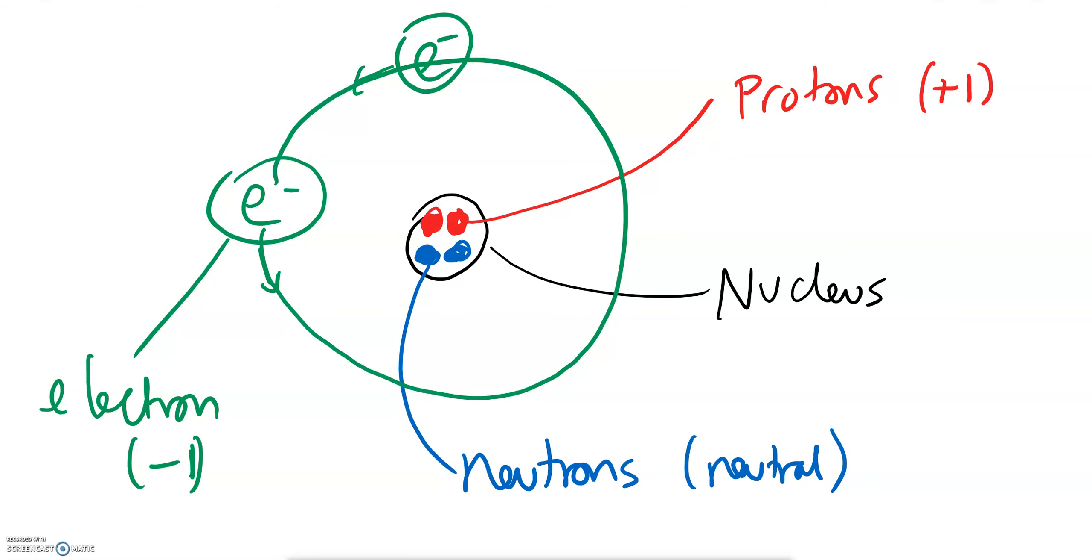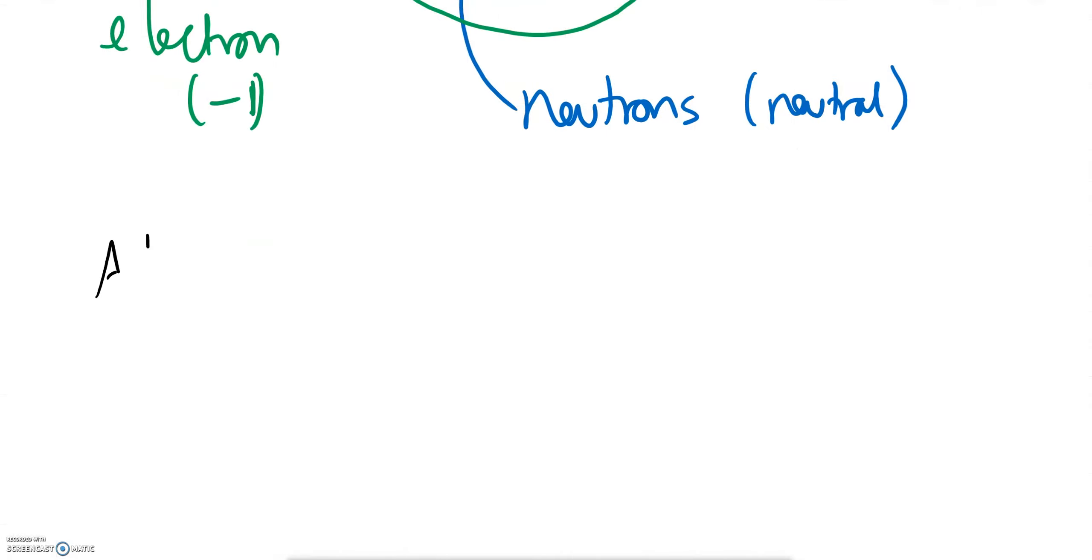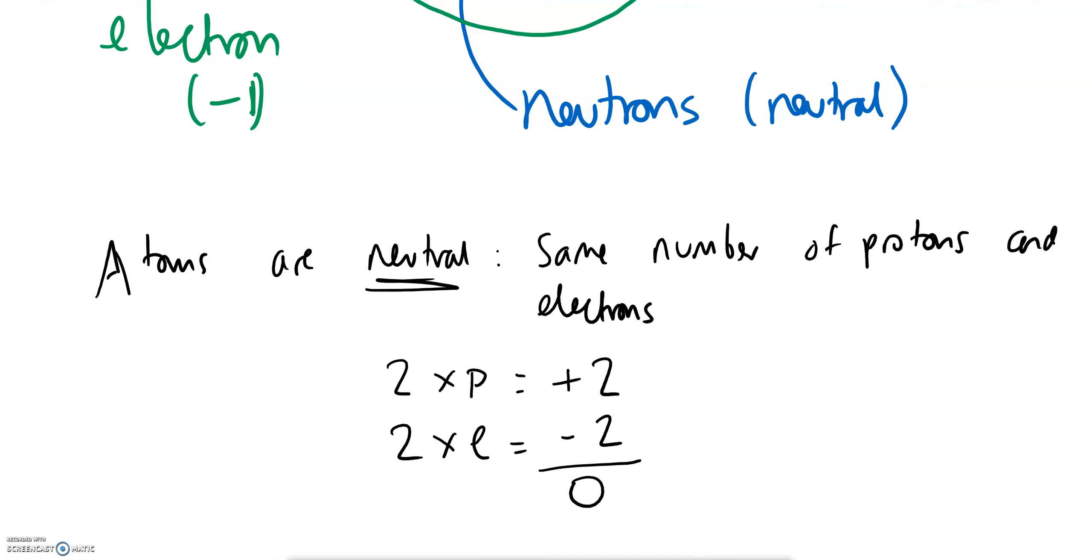So just a reminder that if you want an atom, atoms are neutral. That means they have the same number of protons and electrons. So in the picture above there were two protons so they'll need to be two electrons. Why? Remember the protons - if we have two protons, two times p, that's going to have a charge of plus two because each proton is plus one. And therefore if we have two times electrons, two times minus one is minus two. See when we add those charges together we end up with it being neutral.